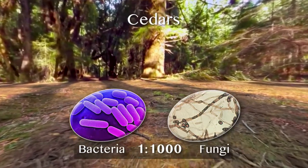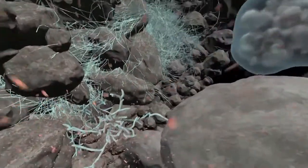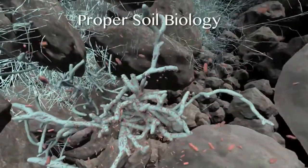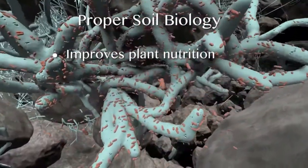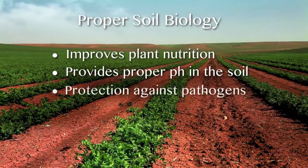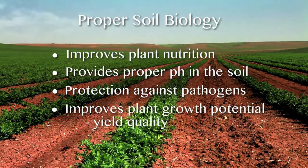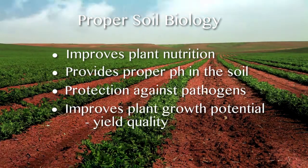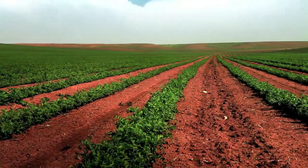It's extremely important to have the right biology with the plant types that we're growing. Without the proper balance of biology, your plants will not have the nutrition that they require, they will not have the proper pH in the soil, they will not have the protection against pathogens, and they won't develop the growth potential and the yield quality that is in that DNA structure — the divine blueprint within the plant's potential.